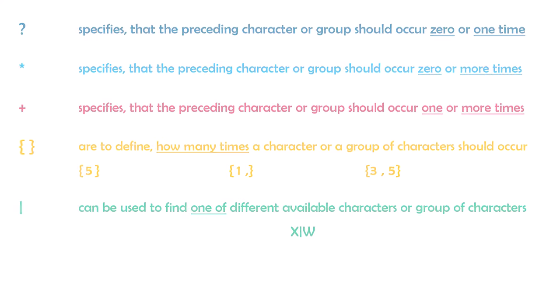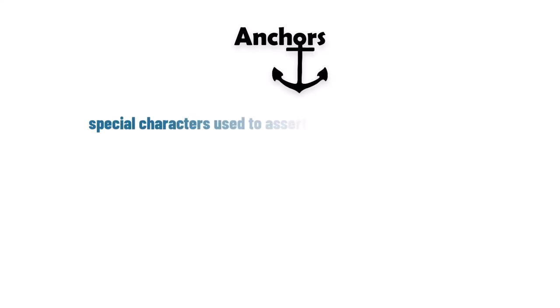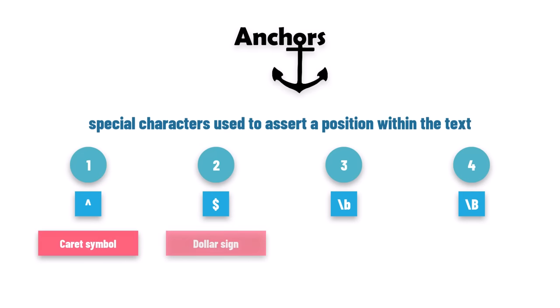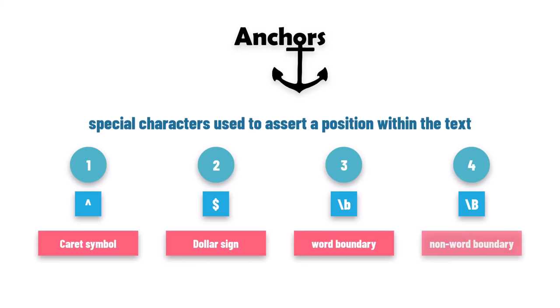Let's now check the next patterns, which are called anchors. Anchors are special characters used to assert a position within the text. They don't match any characters themselves, but indicate where a pattern should or should not occur relative to certain positions in the input string. There are four anchor patterns: caret symbol, dollar sign, word boundary, and non-word boundary.